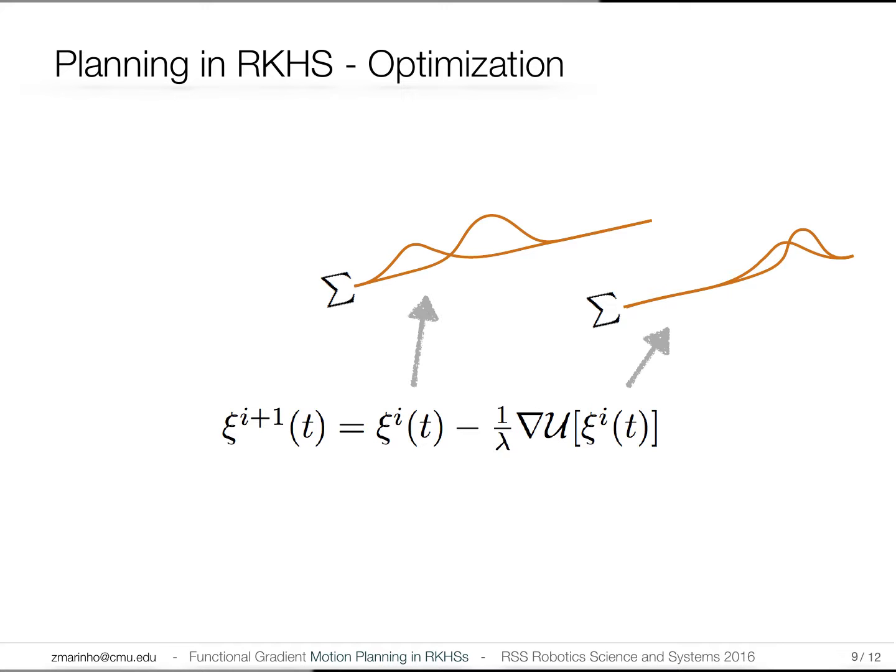Hence, the trajectory is simply built by aggregating more and more kernel perturbations around new time points. This gradient can be computed analytically, and the update rule has a closed-form solution, so it is fast and efficient to compute. In the end, our trajectory simply awaited sum of these kernel perturbations.